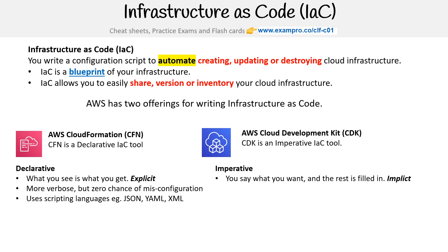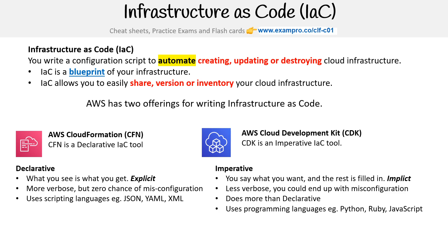For imperative, you say what you want and the rest is filled in — so it's implicit, it's less verbose. You could end up with some misconfiguration; that's totally possible. But it does more than declarative, and you get to use your favorite programming language, maybe Python or JavaScript. CDK does not support Ruby right now, but I just have that in there as a general description of what imperative is.